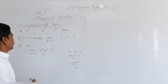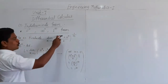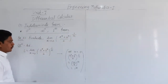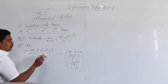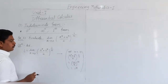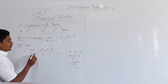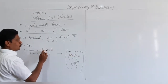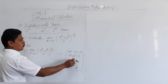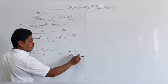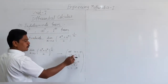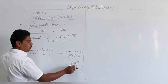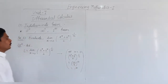Second example: evaluate limit x tends to 0 of (A raised to x plus B raised to x divided by 2) raised to 1 upon x. Let this limit equal L. Putting x equal to 0, we get (A raised to 0 plus B raised to 0) divided by 2, raised to 1 upon 0. Since A raised to 0 equals 1 and B raised to 0 equals 1, we get (1 plus 1)/2 equals 1, raised to infinity. This is the 1 raised to infinity form.